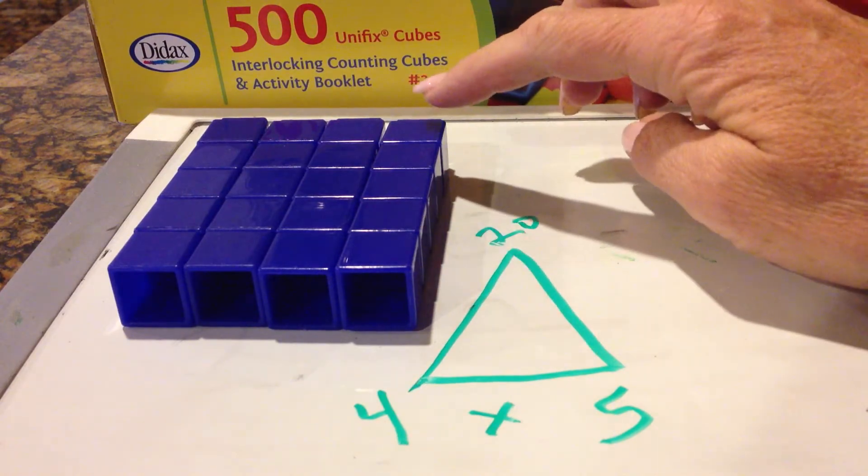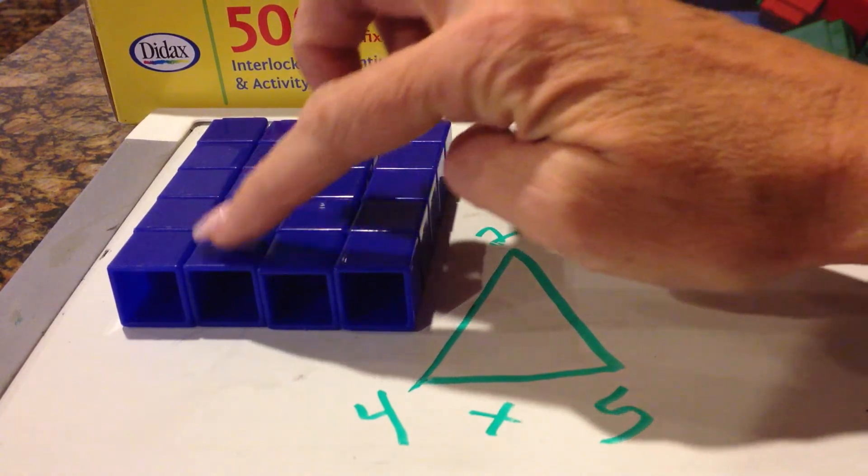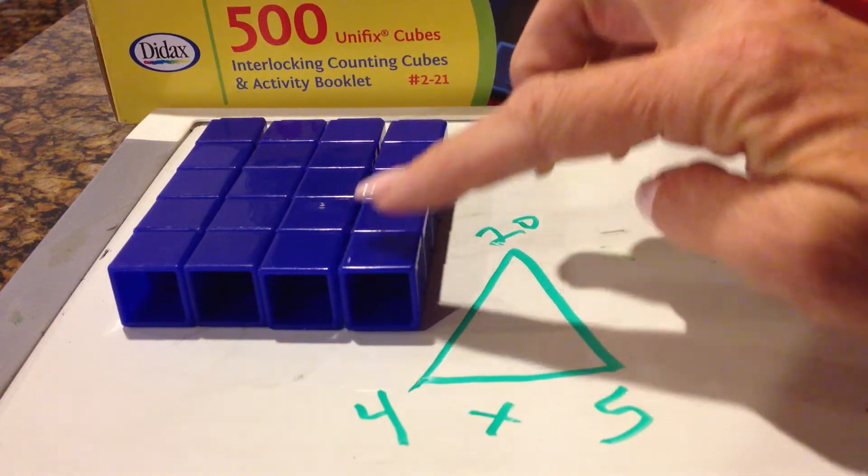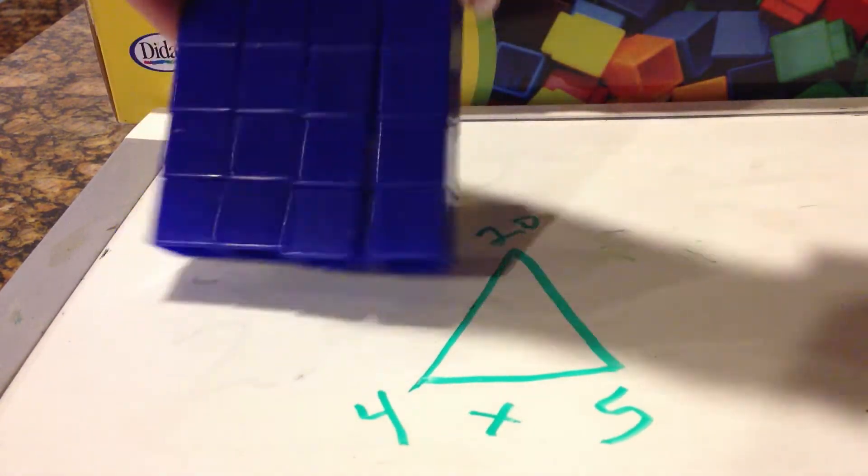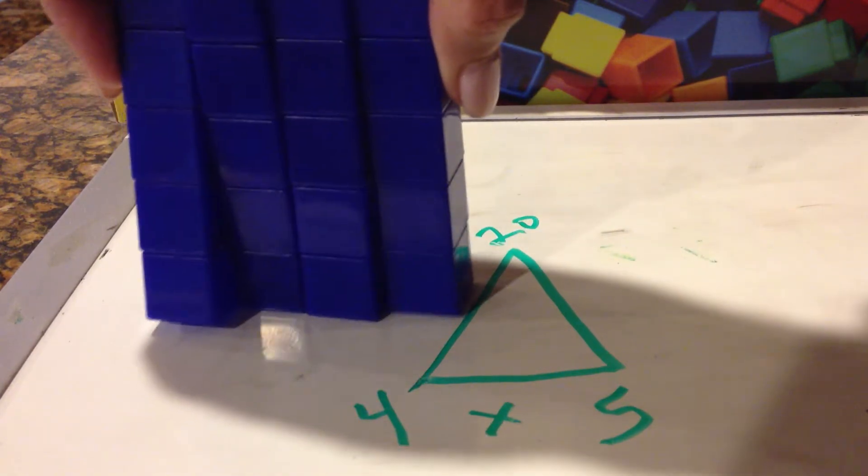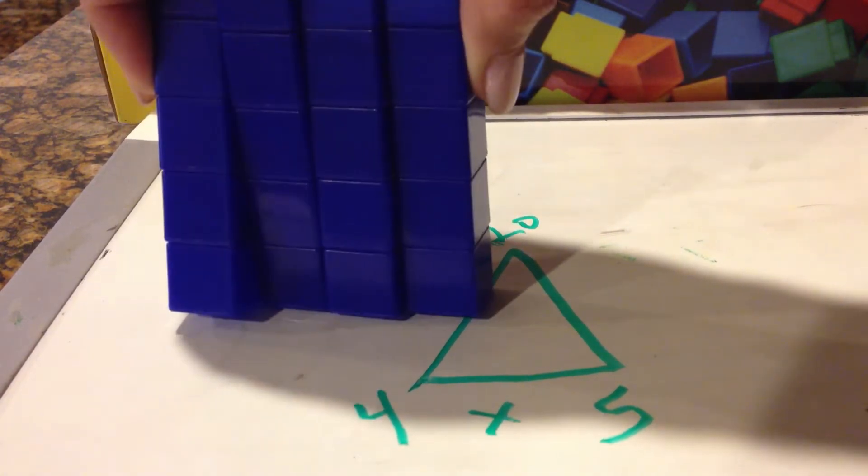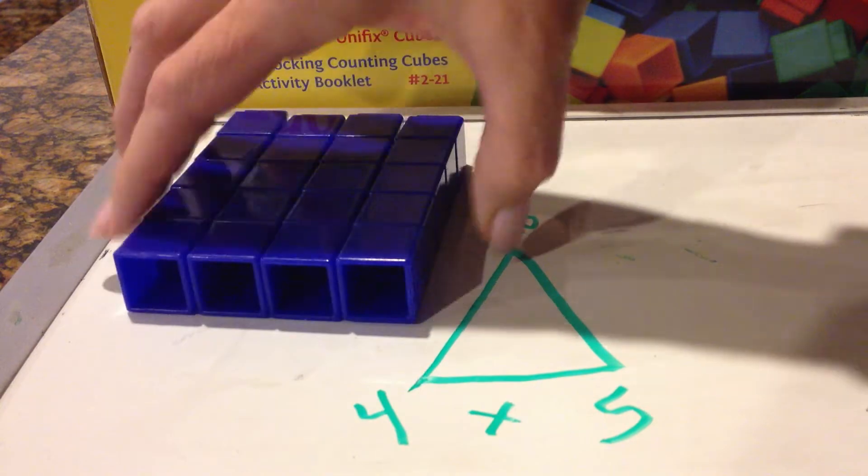So it's always going to be 1, 2, 3, 4 times 1, 2, 3, 4, 5. And every fact family with whole real numbers forever is going to look like a square or a rectangle. Okay, this one is a rectangle.